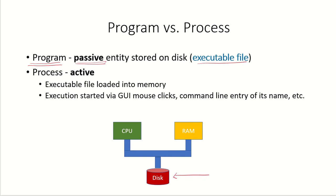When this file is loaded into the RAM for execution, this execution could be started via GUI mouse clicks or a command line entry of the name of the program. When this is done, this particular program which was available on the storage will be taken into the main memory or the RAM for execution.